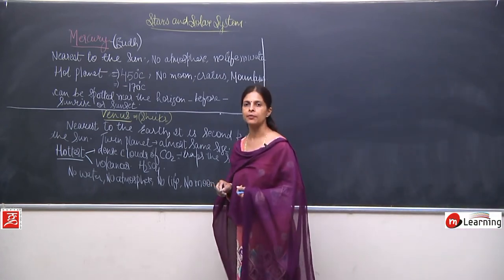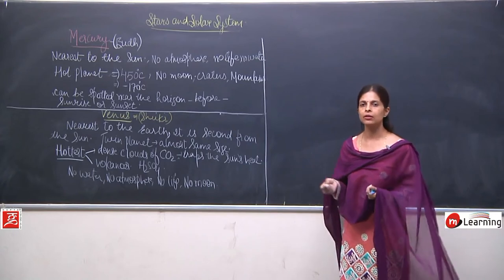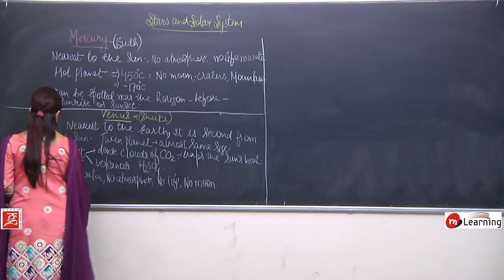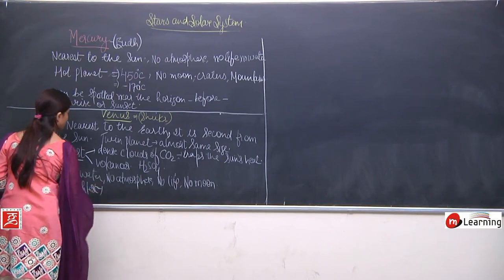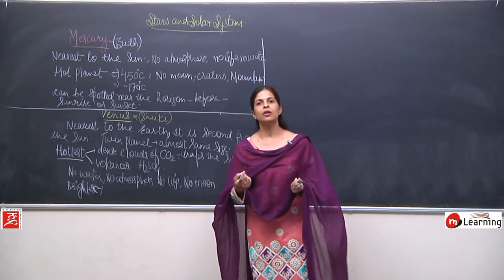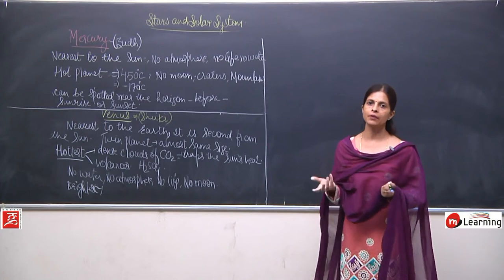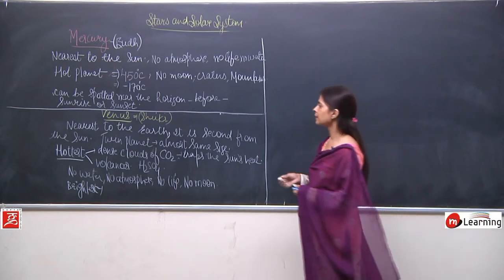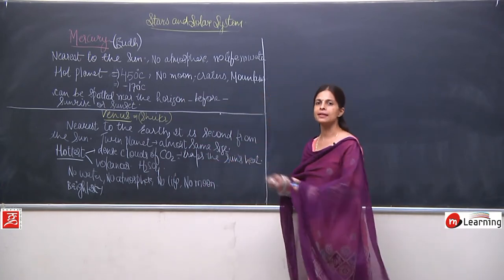Venus is also known as the brightest star. Even though it is not actually a star — it is a planet — we still say it is the brightest star. Why is it brightest? Because of the dense gases and clouds around it, the sun's light gets reflected, making it appear very bright.